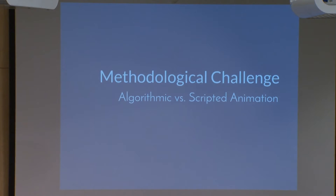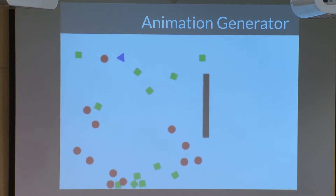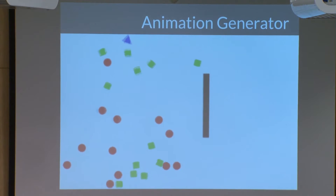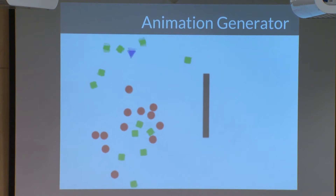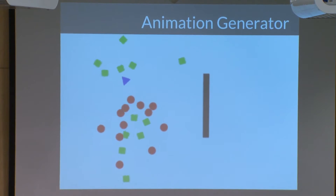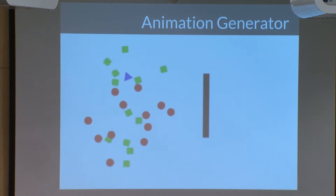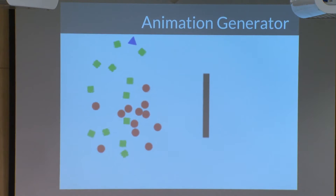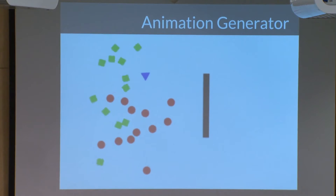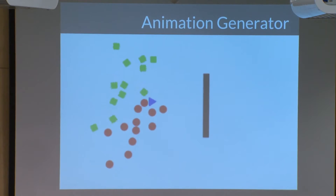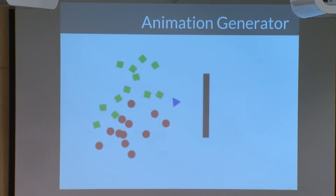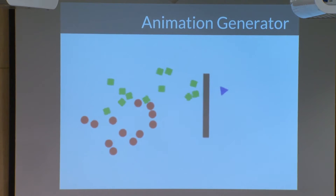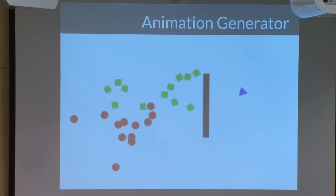In order to prevent this from becoming a major confound, we use algorithmically generated videos. The first two and a half weeks of my project dealt with programming an animation generator that would allow these in studies of perceptual animacy. The animation generator is a versatile computer application that allows investigators to define the numbers of objects, the types of objects, and the behaviors of objects in order to create various animations.